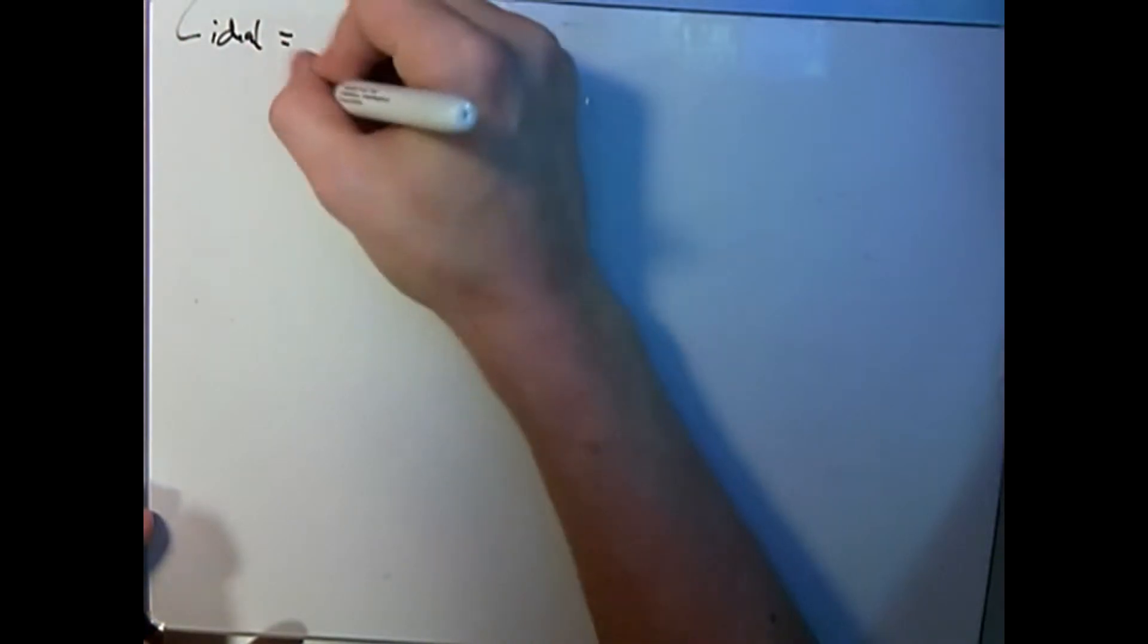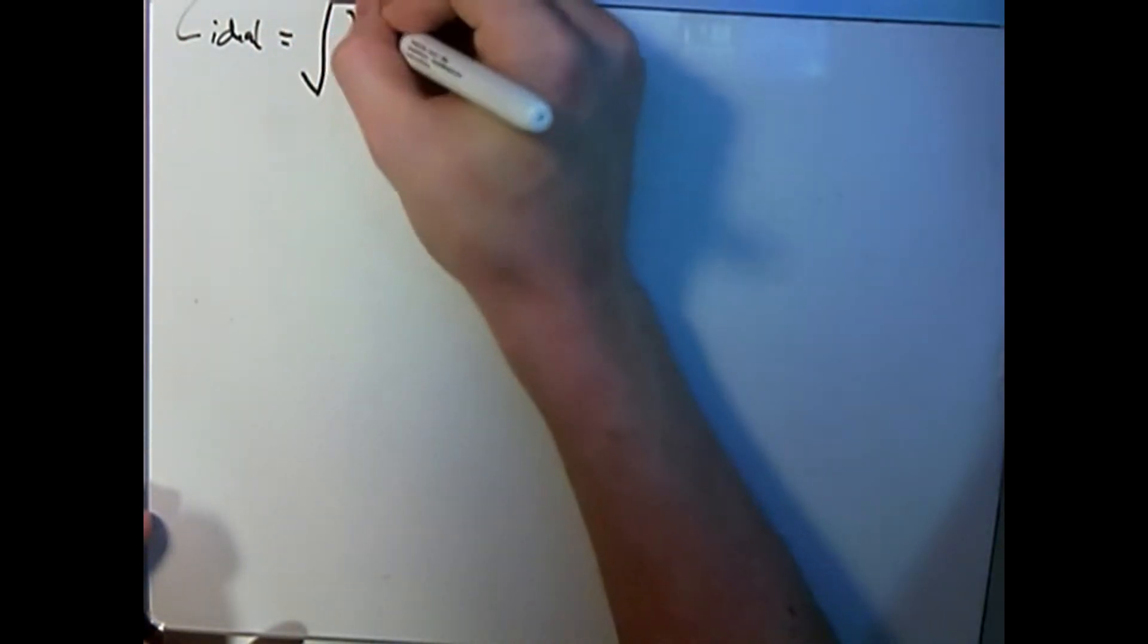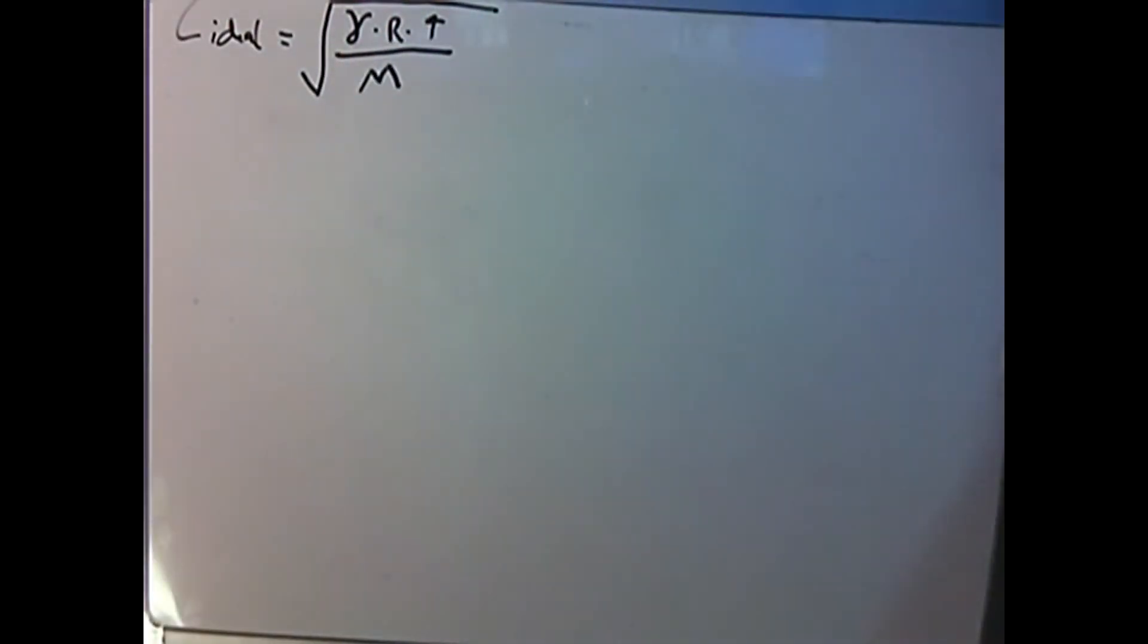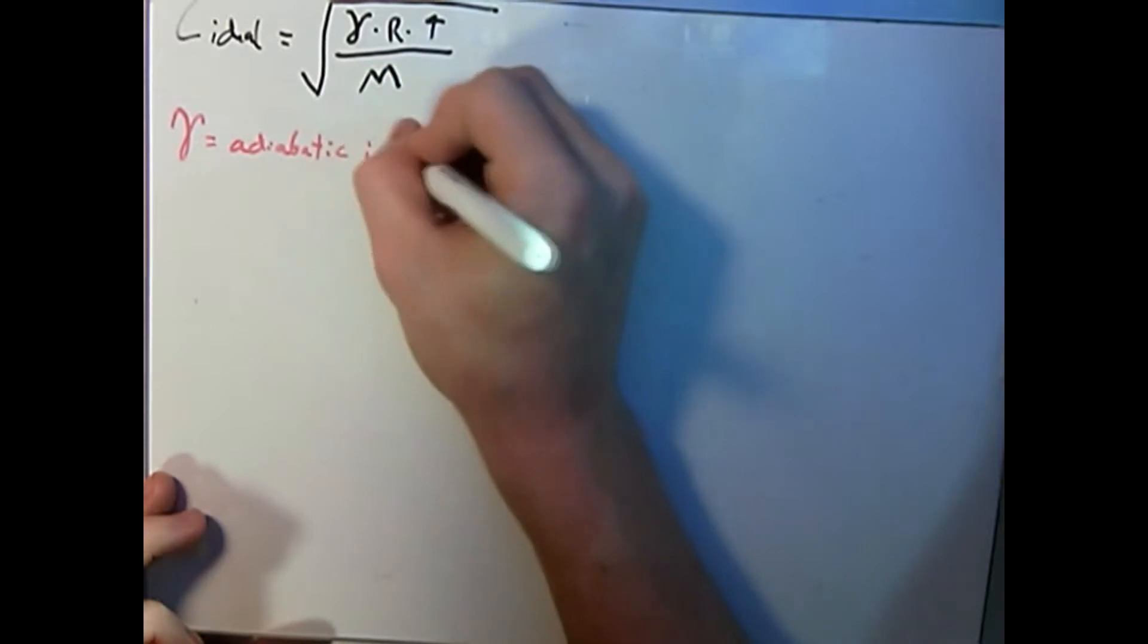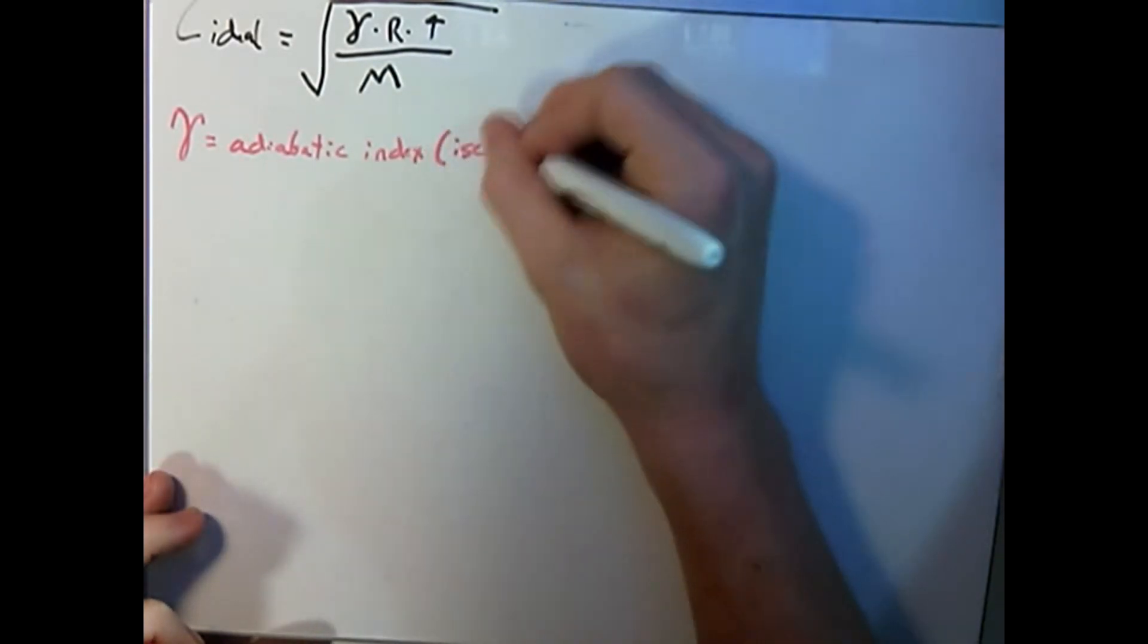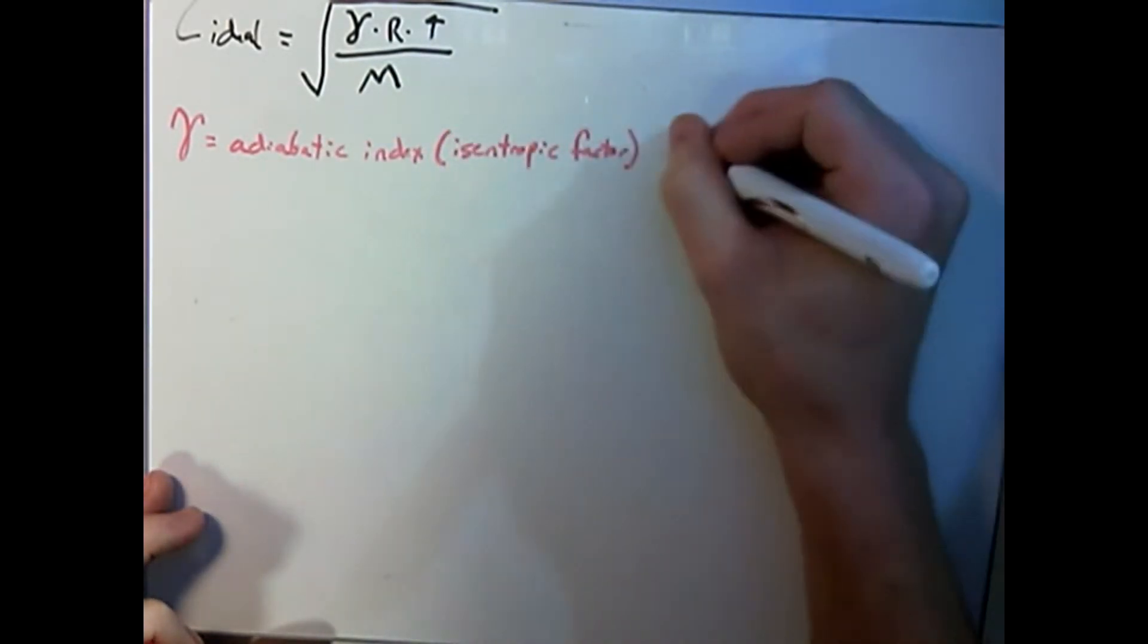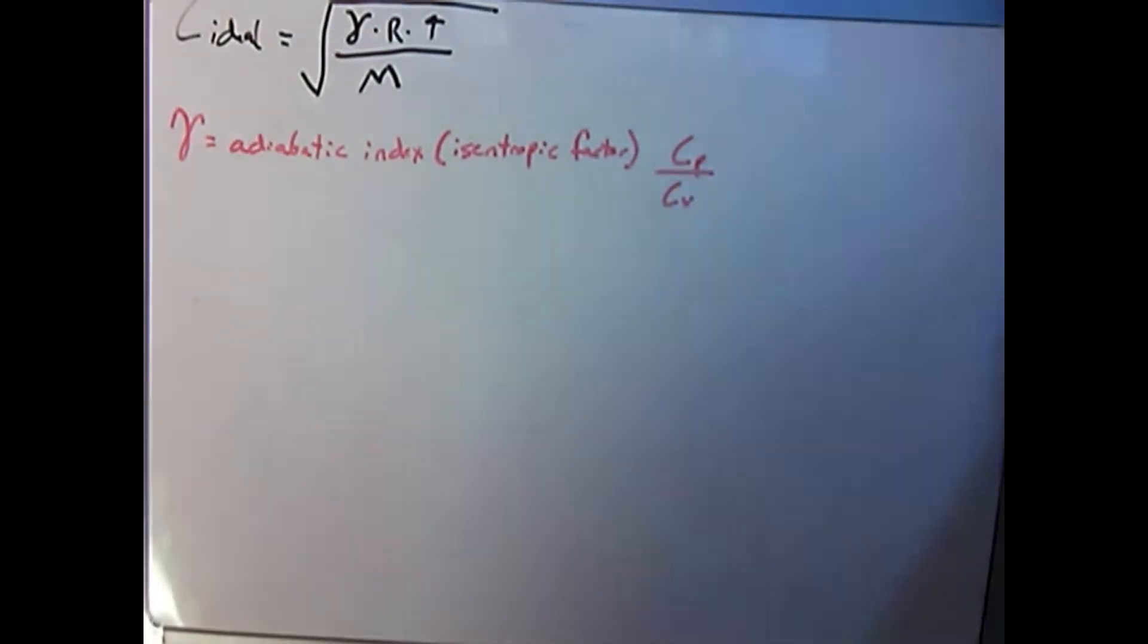If we look at the relation between the speed of sound through a given media, we'll come up with the following equation: C equals the square root of gamma times R times T divided by M. Gamma is the adiabatic index, also known as the isentropic expansion factor. It is the ratio of a specific heat of a gas at constant pressure to the same gas at a constant volume.